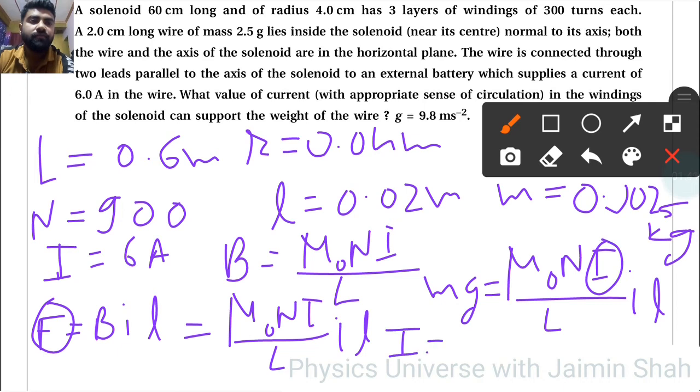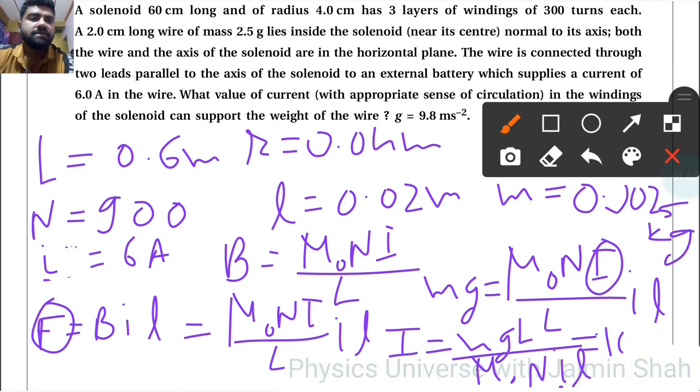So I equals mg upon μ₀nIl. Now by putting values, the answer is 108.36 amperes.